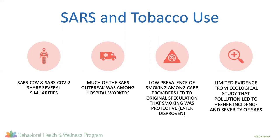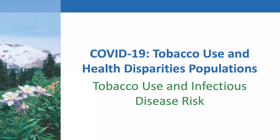A recent study linking air pollution and increased risk of mortality from COVID is currently in pre-press. Basically, chronic exposure to toxins and particulate matter damages the lungs, causes an inflammatory response, and is directly linked to many of the comorbidities associated with COVID. The question we want to turn to now is: what are the potential ways tobacco may aggravate the disease?